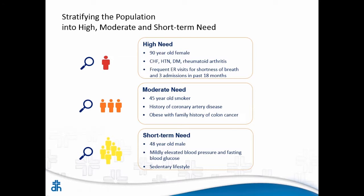Think about the high-needs person: someone who has heart failure, hypertension, diabetes, rheumatoid arthritis, frequent ER visits. The moderate need might be a smoker who needs that extra push to become an ex-smoker, or someone with a history of coronary artery disease who's doing well — lost weight, exercised — there's still a moderate need there. Short-term need: someone just diagnosed with hypertension who needs to get on medications, lose some weight, exercise — get them through that and their risk goes down.